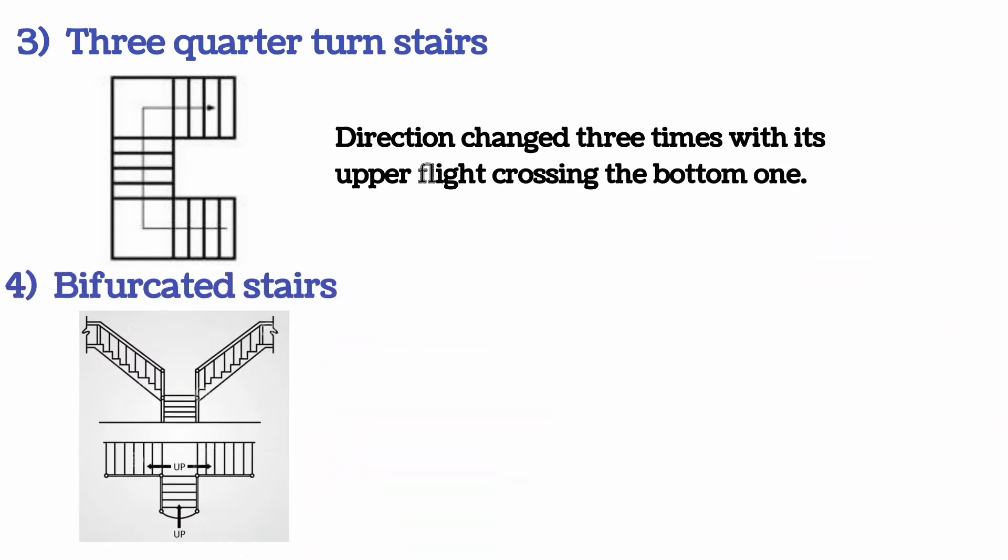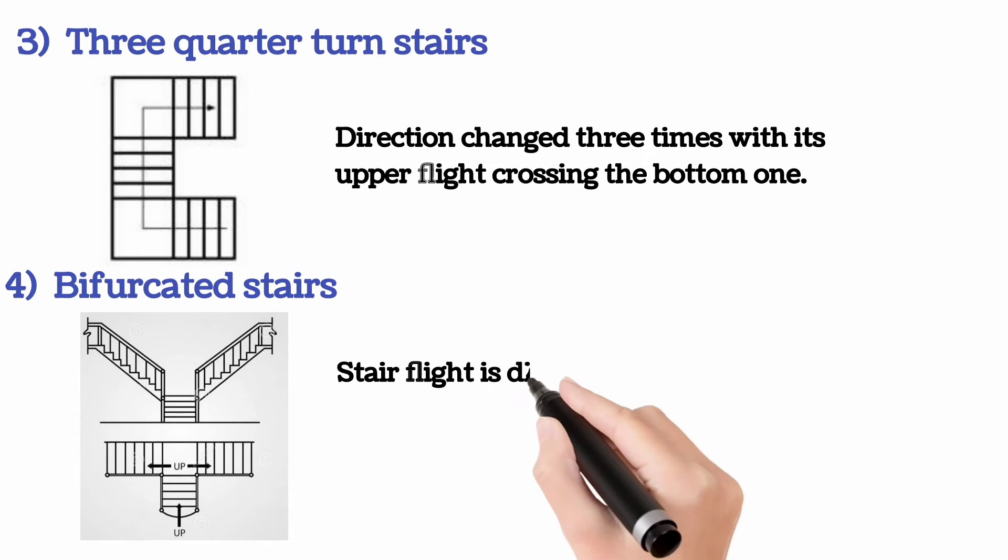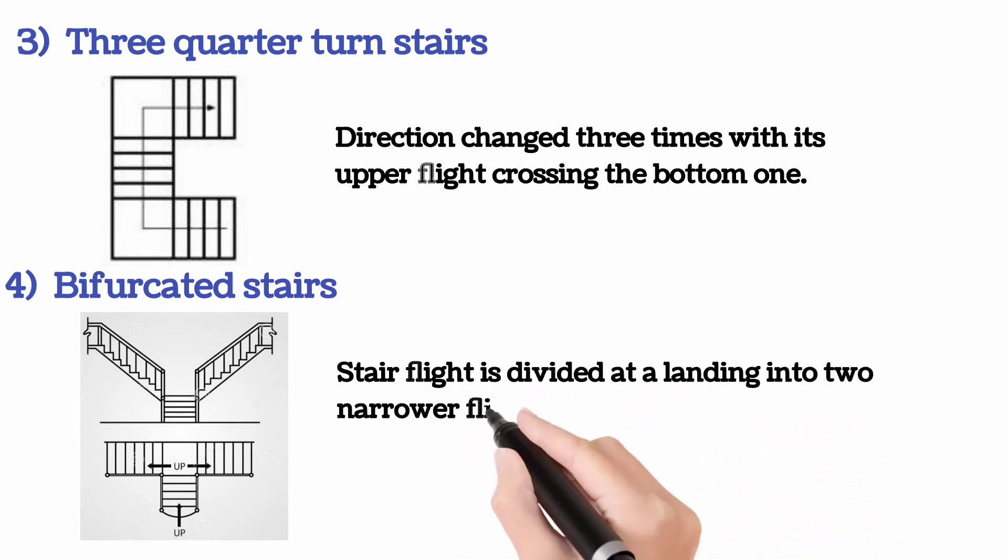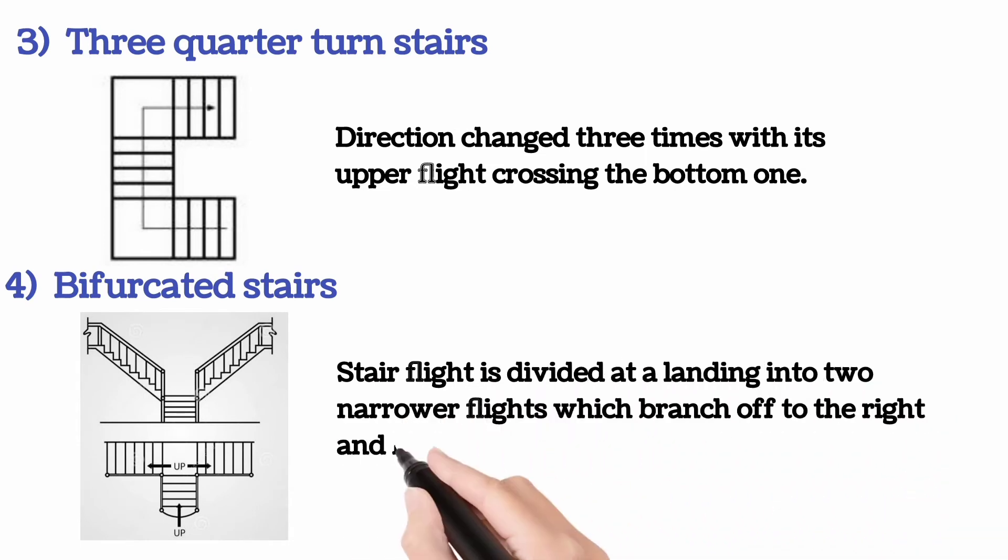Bifurcated stairs: stair flight is divided at a landing into two narrower flights which branch off to the right and left.